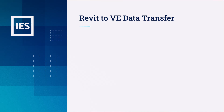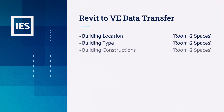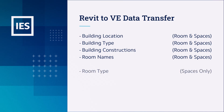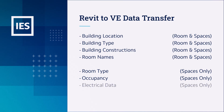Using rooms will transfer only the building location, building type, building constructions or fabric, and the room names. But using spaces will bring in all of this plus additional information such as the room type, the occupancy, the electrical data, and the zone data.